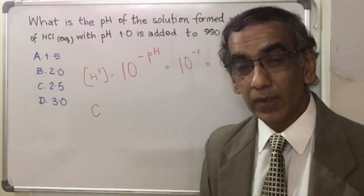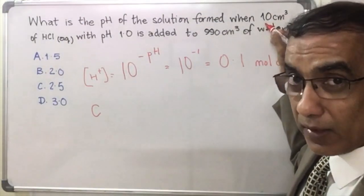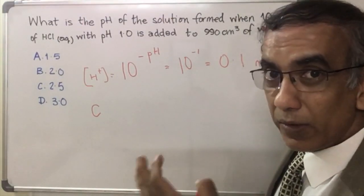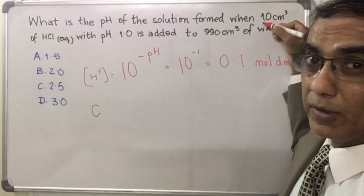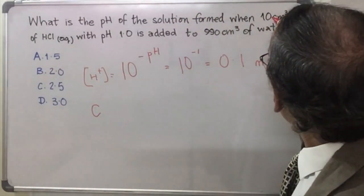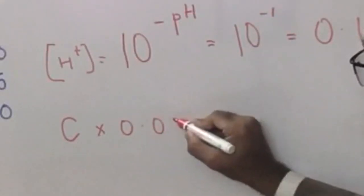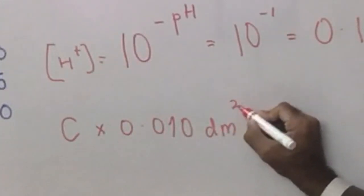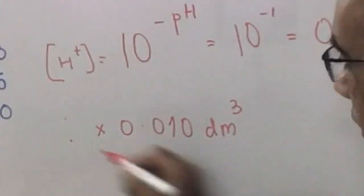Let's convert that cm³ into dm³. To do that, you divide by 1,000 — that's another piece of knowledge you've got to have. And in your head, because you have no calculator in the multiple choice exam, you must shift your decimal point 1, 2, 3 places, and you get 0.01 dm³ as the volume. The concentration has already been determined: it's 0.1 moles per dm³.